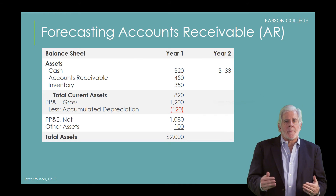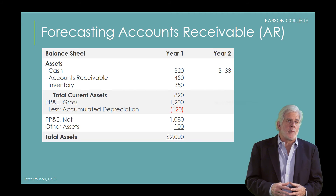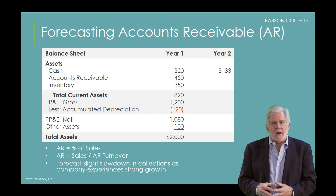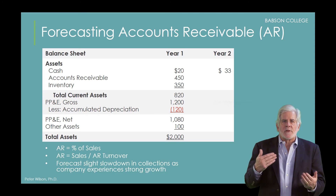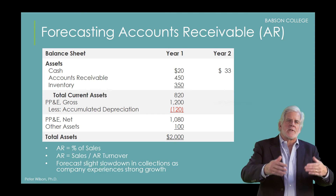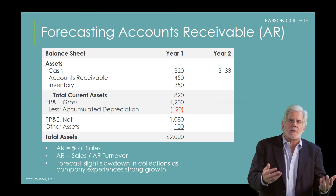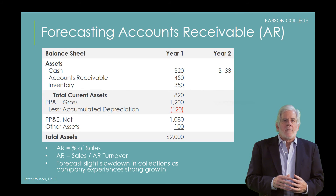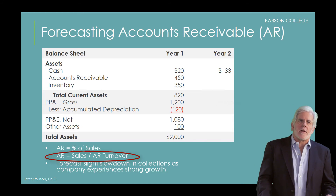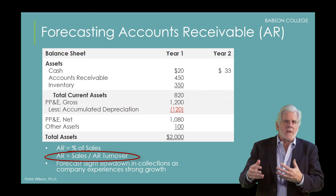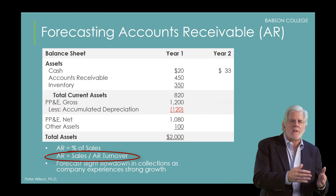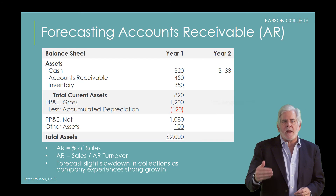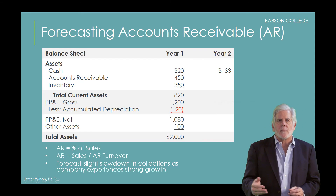The level of accounts receivable depends on your sales forecast and should also take into account any initiatives underway to accelerate collections from customers. One way to project receivables is as a percentage of sales based on past relationships. However, since many firms employ working capital best practices that target a specific accounts receivable turnover ratio or days in receivables, receivables can be forecasted based on either of those ratios as well. The accounts receivable turnover ratio is calculated as sales divided by accounts receivable, and rearranging gives: accounts receivable equals sales divided by the accounts receivable turnover ratio. In this way, you can project receivables based on the sales forecast and a target turnover ratio the firm wants to achieve.